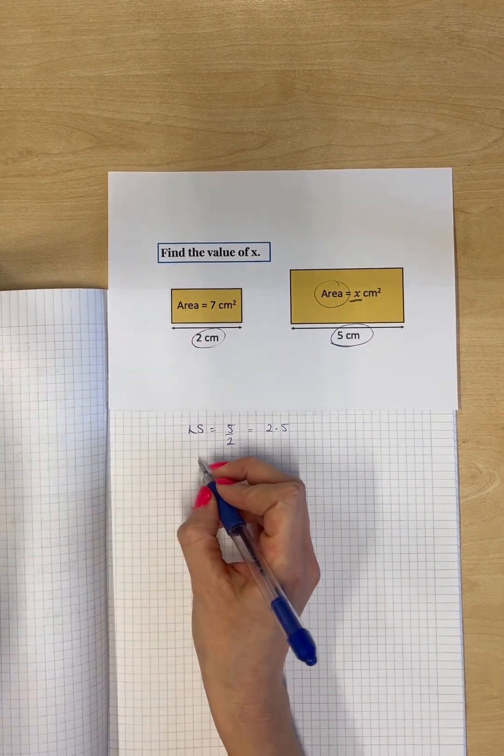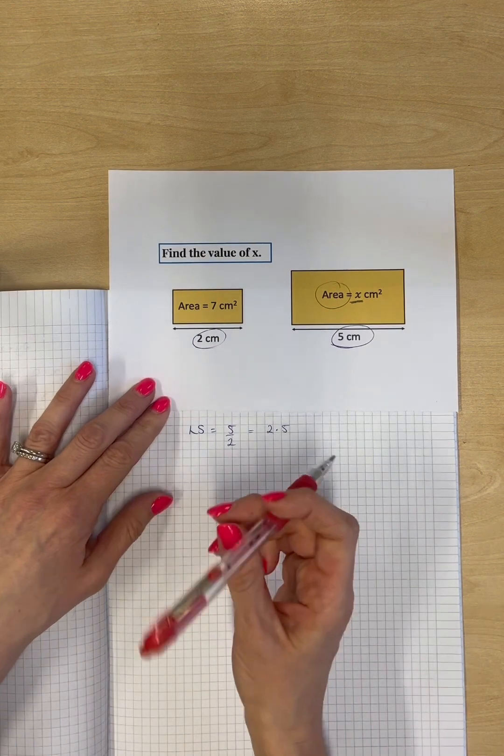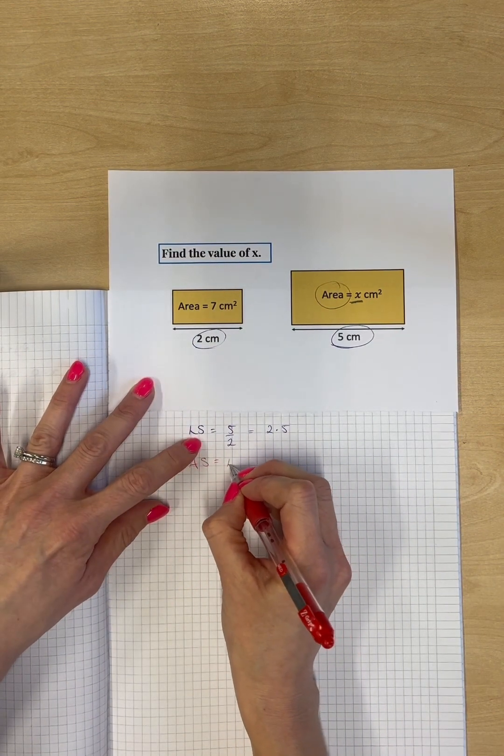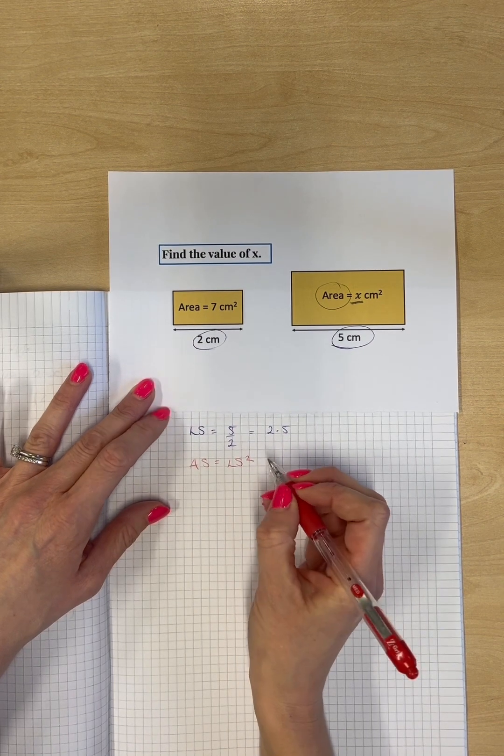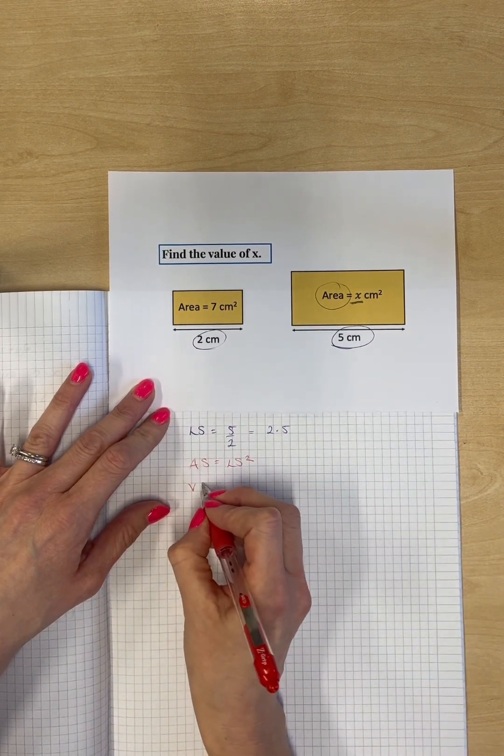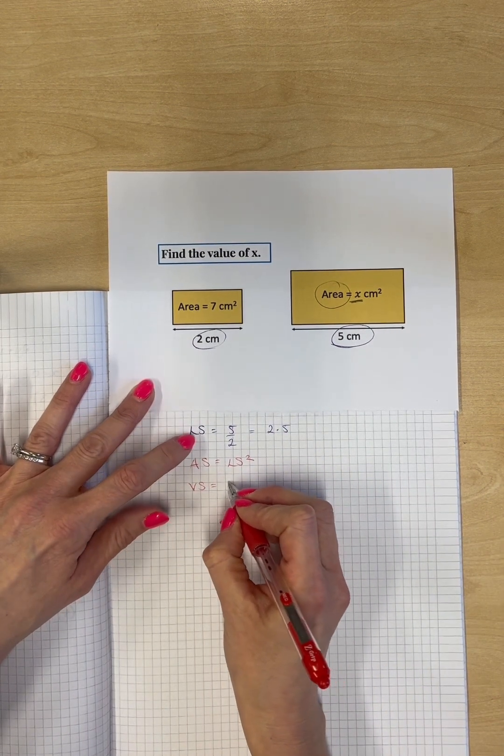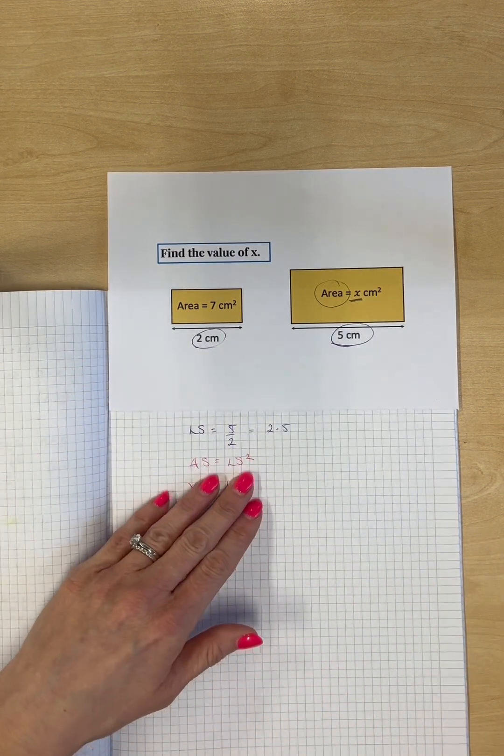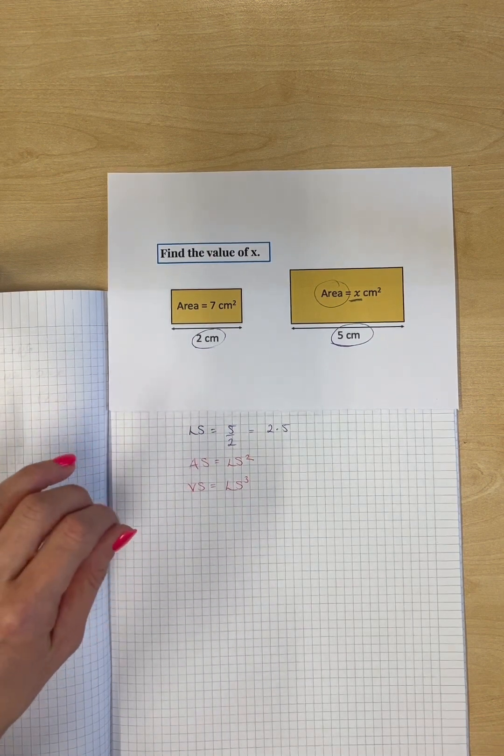Now, to find the area scale factor, we have to do area scale factor is the length scale factor squared. And if we needed the volume scale factor, that would be length scale cubed. But we don't need the volume in this one.